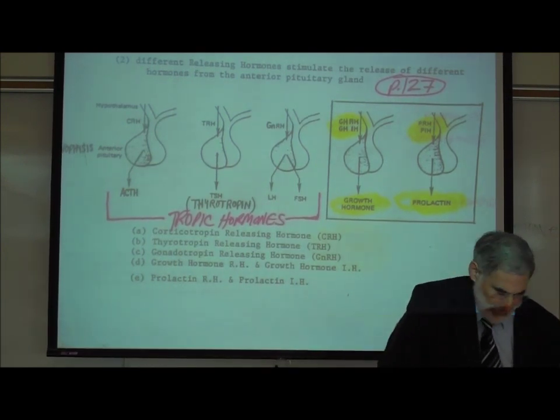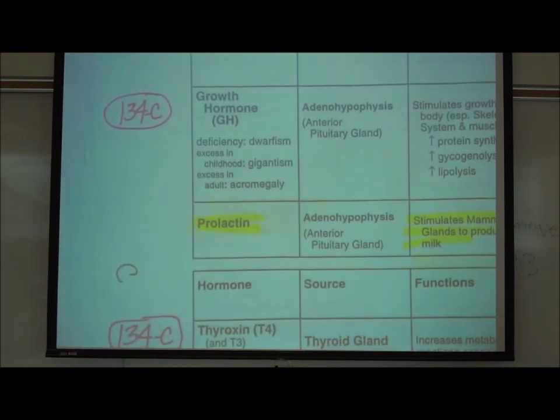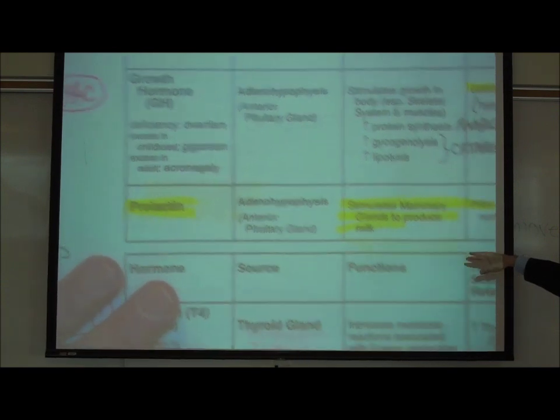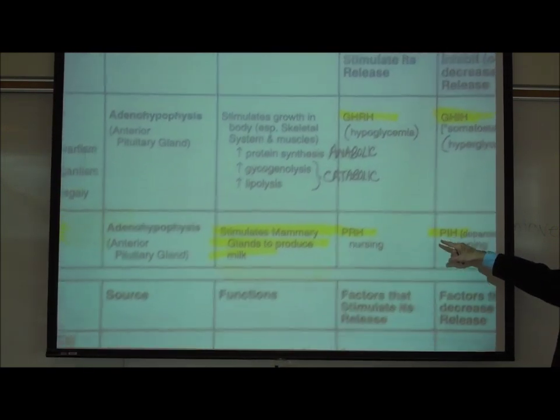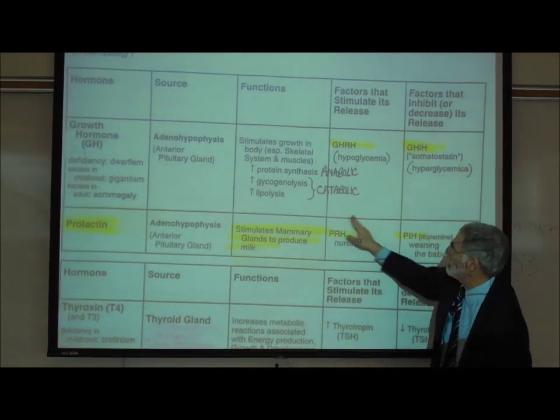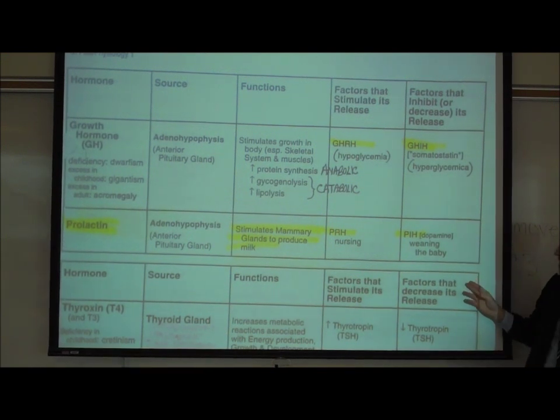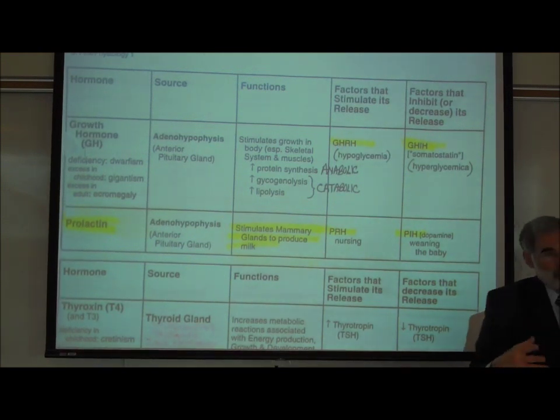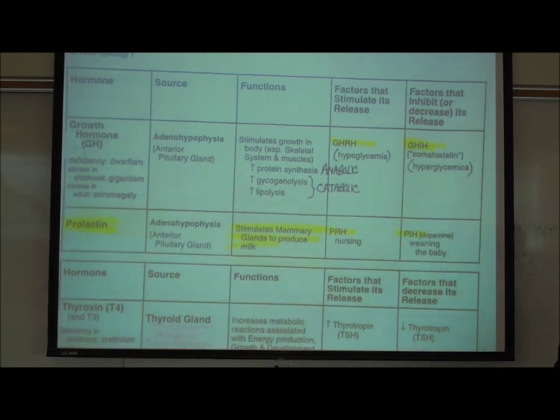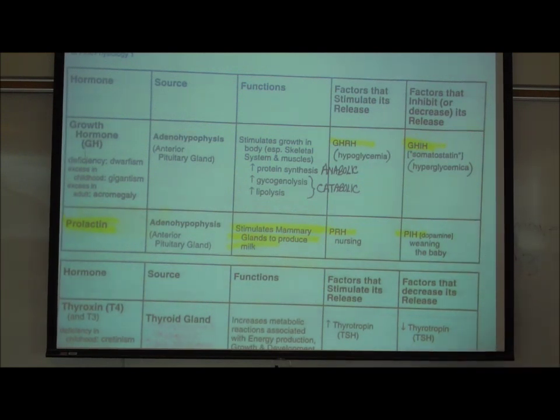Let's summarize prolactin by looking at page 134C. It says growth hormone and prolactin. Looking at prolactin, where does it come from? The adenohypophysis. What does it do? It stimulates the mammary glands to produce milk. What are the factors that stimulate the release of prolactin? PRH and nursing, prolactin-releasing hormone. And what are the factors that inhibit the release of prolactin? Prolactin-inhibitory hormone, which we actually now know is dopamine, or weaning the baby, where you stop having the baby suckle. So this is not a negative feedback. We have to have one way of turning it on and turning it off.